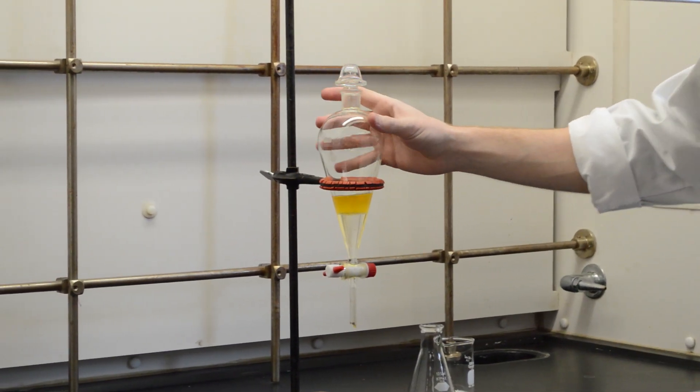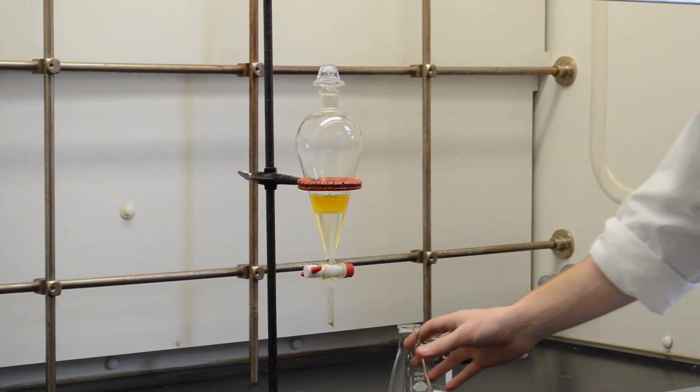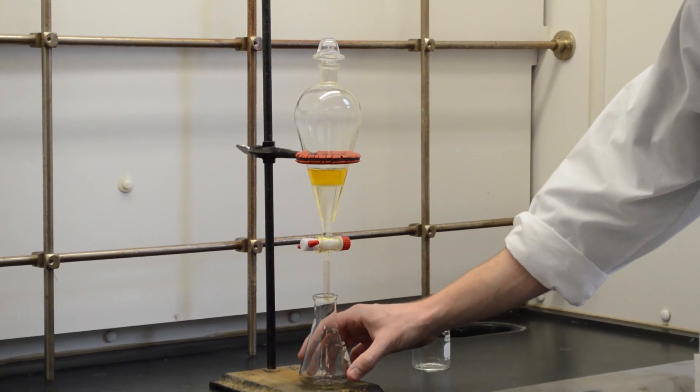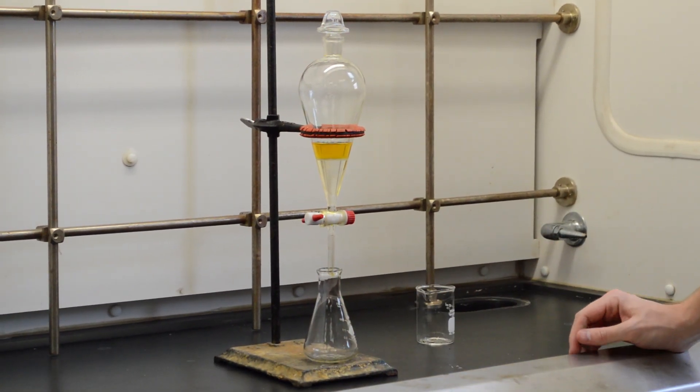When you let it rest for a little while, you can see the two layers form. In this case we've used dichloromethane and water. Dichloromethane is actually heavier than water, so it will be the bottom layer, but with a lot of different organic solvents you'll see that layer on the top instead.